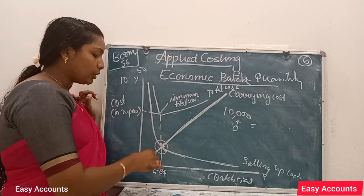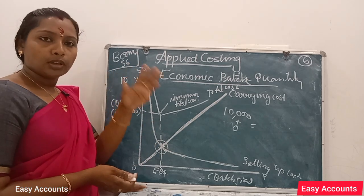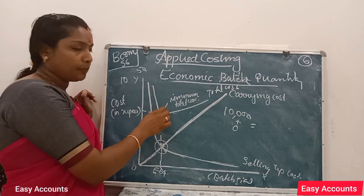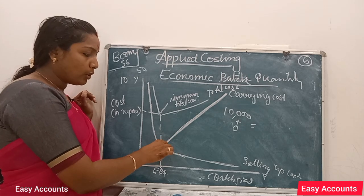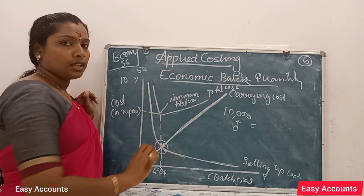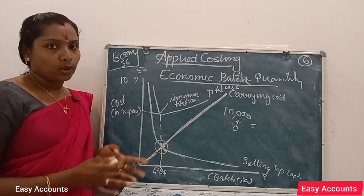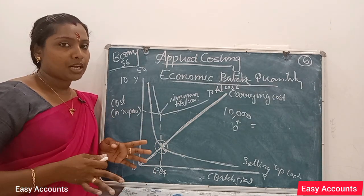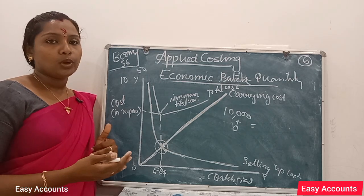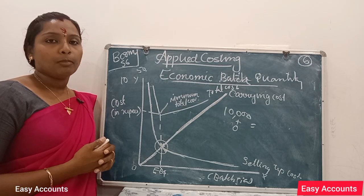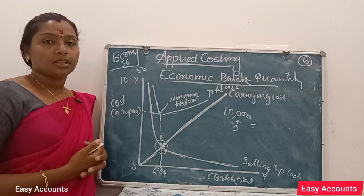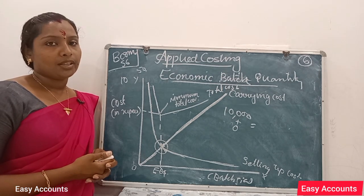We have to have the total cost made up of setting up cost and carrying cost. This is the economic batch quantity — the point where the total cost is minimized. I will see you in the next video.